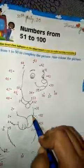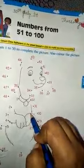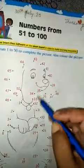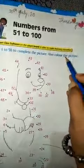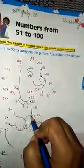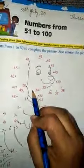Okay bitta, here you are given 1 to 50 counting. So you have to join the dots and complete the picture. Then after the picture is made bitta, what do you have to do? Color.